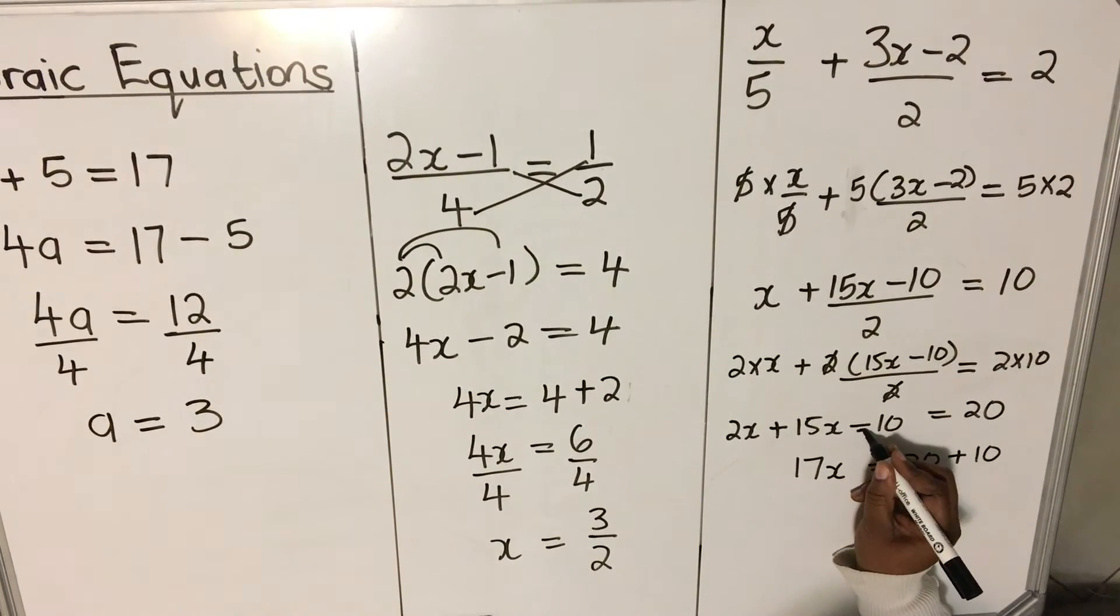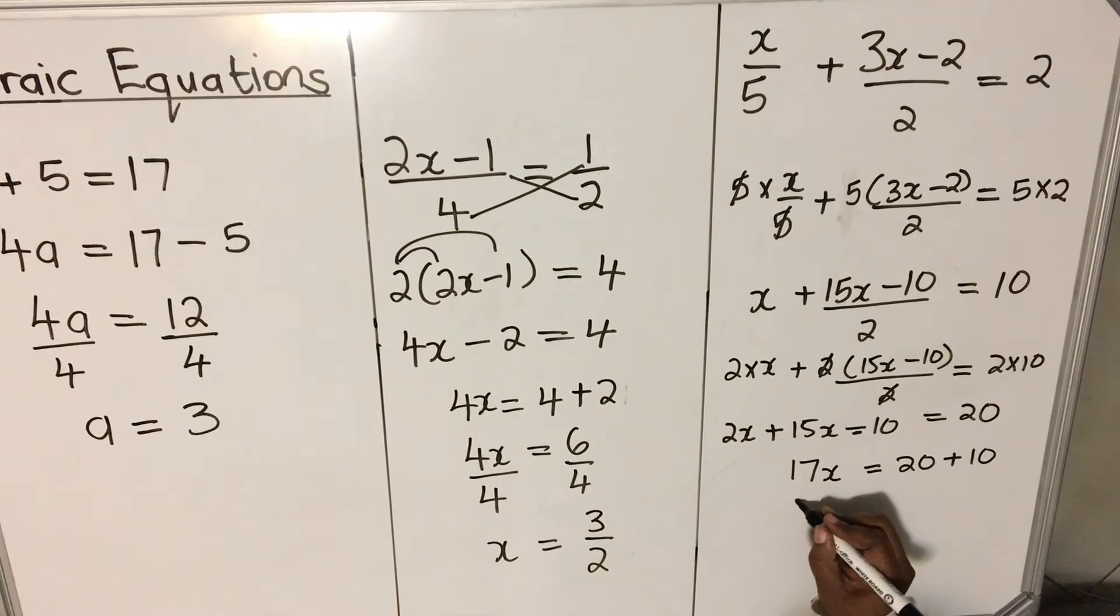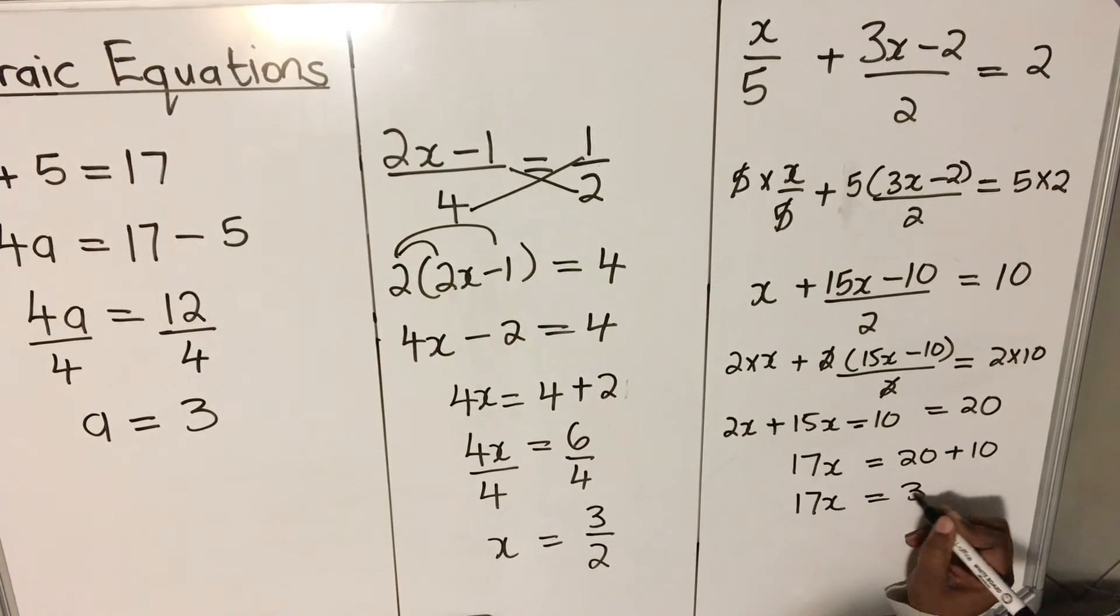Because it was negative, when it goes to the other side, it becomes positive. Then we have 17x is equal to 30.